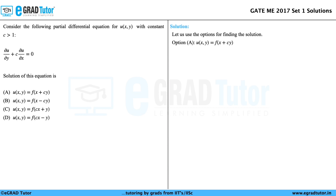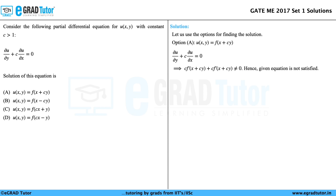Option A says u(x, y) = f(x + cy). The given equation is ∂u/∂y + c·∂u/∂x = 0. If u = f(x + cy), then ∂u/∂y = f'(x + cy)·c, and ∂u/∂x = f'(x + cy).